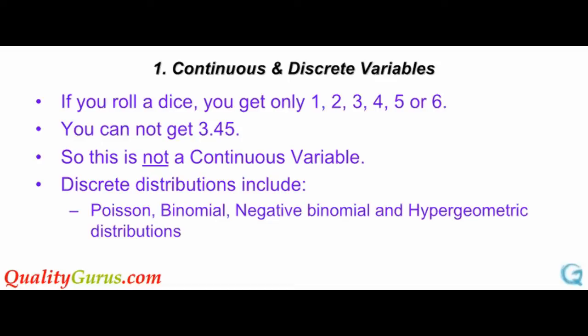Unlike the continuous variables, discrete variables are those which can only assume certain fixed values. If you roll a dice, you do not get 3.45. You just get the integer numbers. Common frequency distributions for discrete variables include Poisson Distribution, Binomial Distribution, Negative Binomial Distribution, and Hypergeometric Distribution.